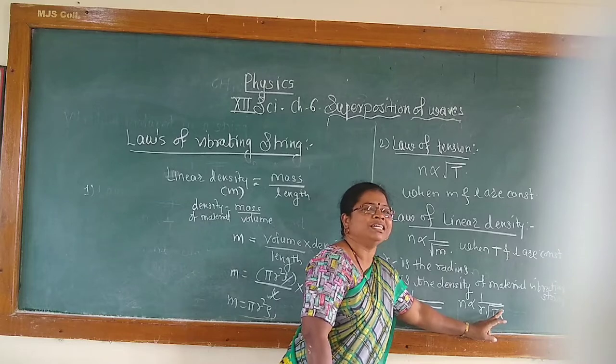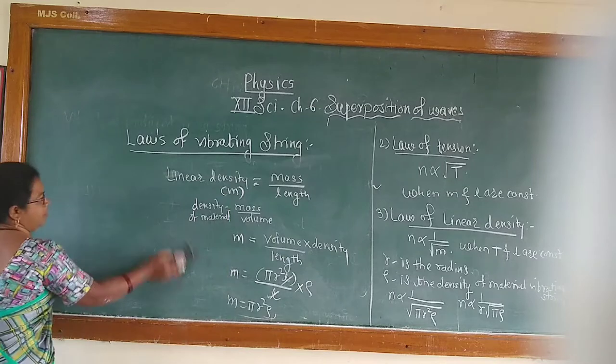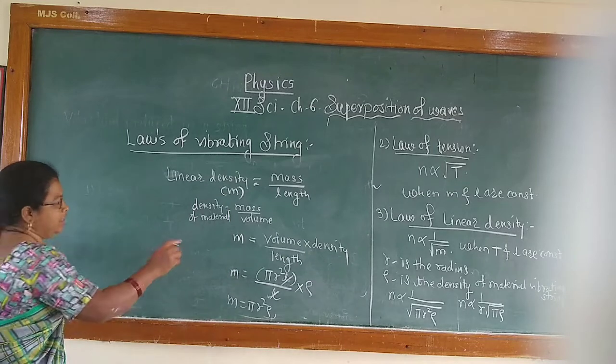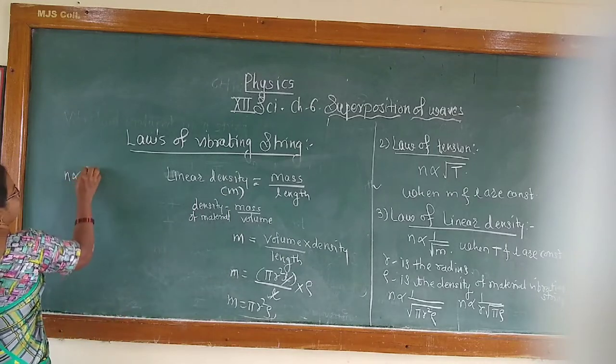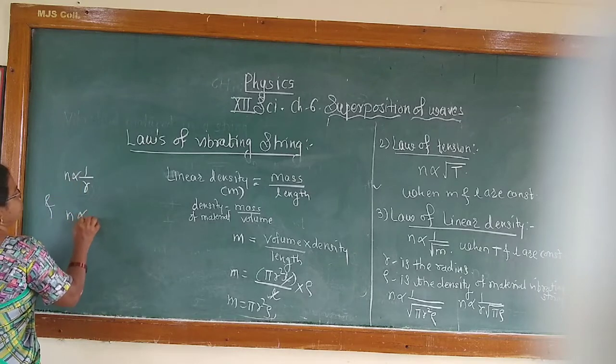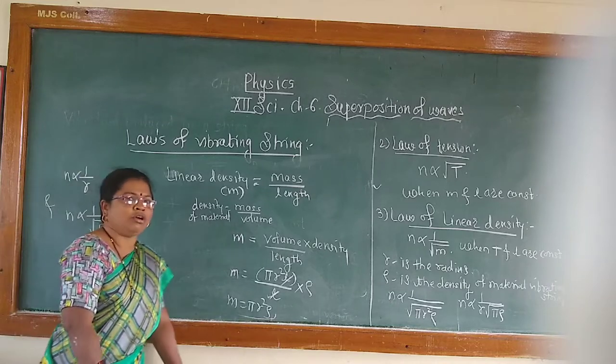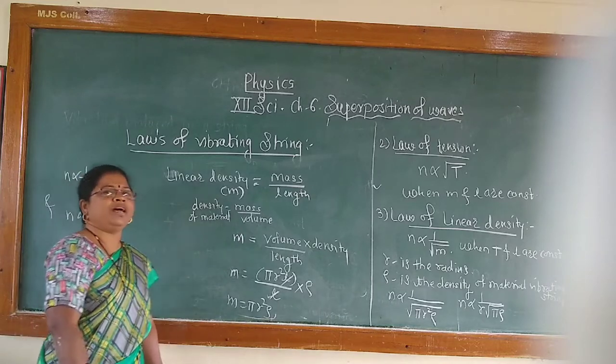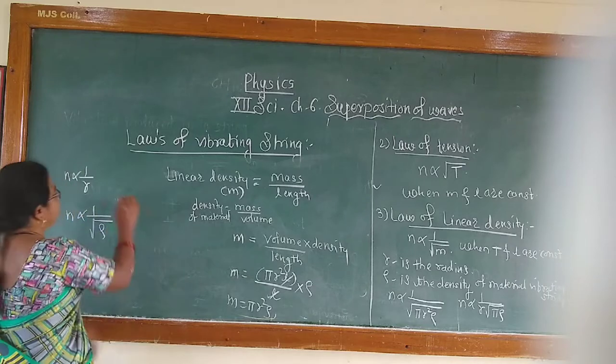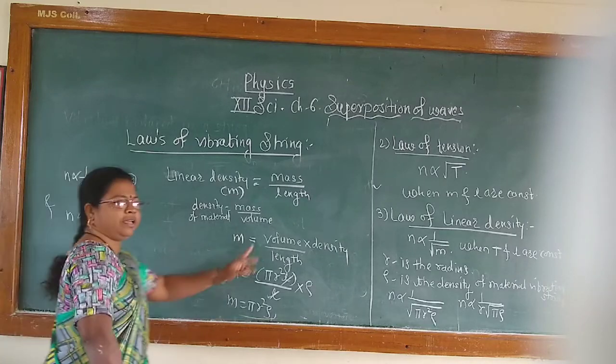One more, that means two laws, which is that frequency is inversely proportional to radius and frequency is inversely proportional to square root of density of material of the string. These are one more laws which we've got from this equation.